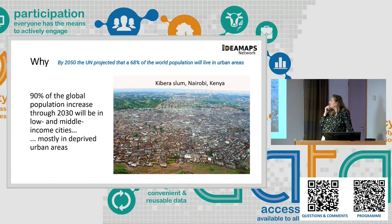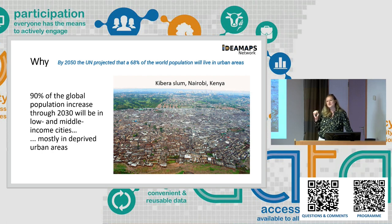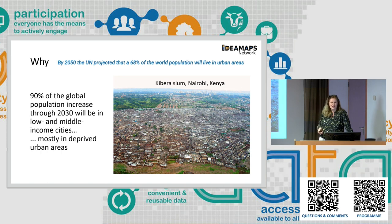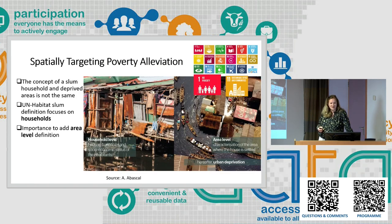What we see is that this massive urbanization — and what we're talking about is the majority of our future population. Just thinking about that 90% of future urban population growth is projected to be happening in low- and mid-income cities, and the majority in deprived urban areas. So, we are talking about the living conditions of the majority of the future generation. This is also reflected in the SDGs, like SDG 1 on no poverty, and SDG 11 on sustainable cities, with the first indicator on slums, informal settlements, and inadequate housing — and the challenges of monitoring these indicators.